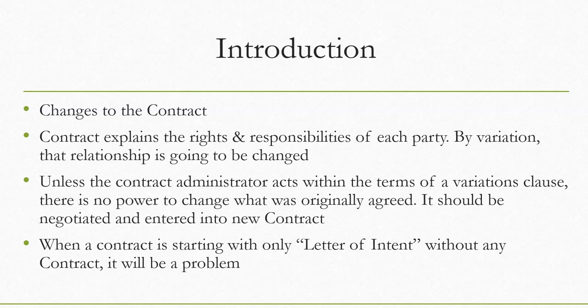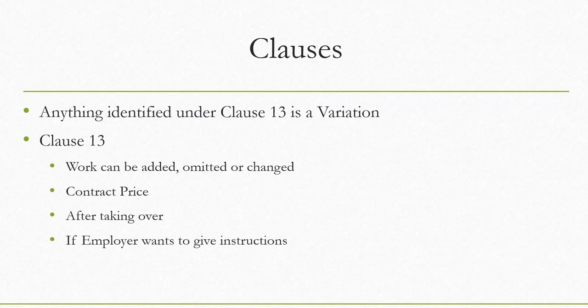Under a letter of intent, you are not entering into a contract — you are only expressing intent and a preference toward the contractor, while indicating uncertainty about whether the project can start. If you are working only with a letter of intent without a letter of acceptance, your formal agreement has not been established. In such a situation, you cannot go for variations. To issue variations, there must be a letter of acceptance or a signed agreement.